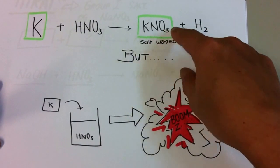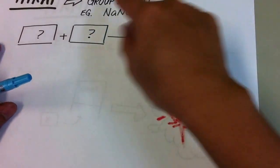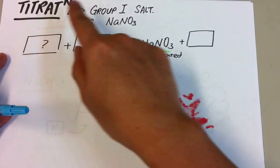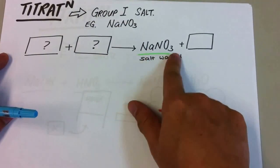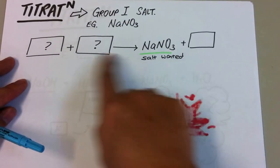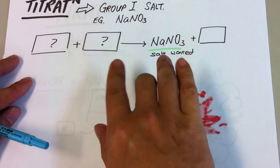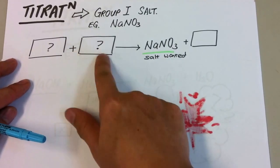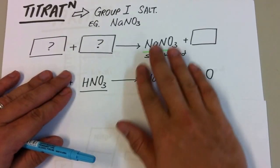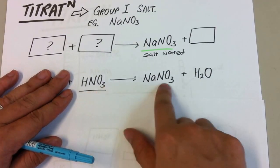You will still get your KNO3 and hydrogen gas, but at your own expense. So how do we do it? We will use a process known as titration for group one salts. So example, if I want NaNO3, this is the salt that I want. What two things will I put in? So look carefully. Run through your four general equations of acid. What acid will I put inside?